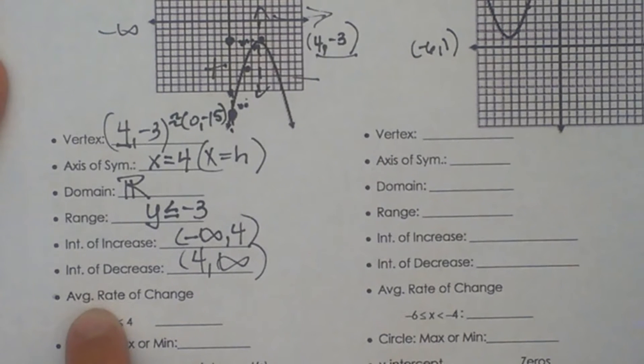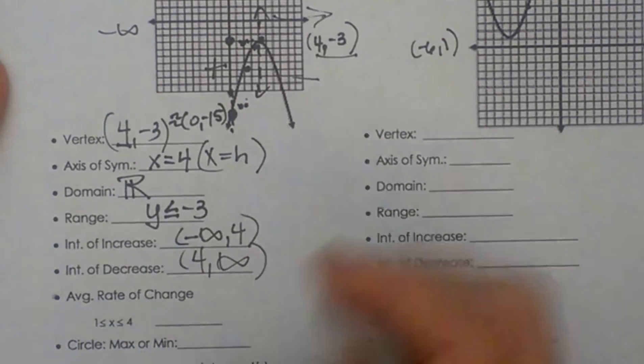Average rate of change. Average rate of change is just basically your slope. It is the slope of a curve. So it is going to be different on different intervals. So let's look at the average rate of change.